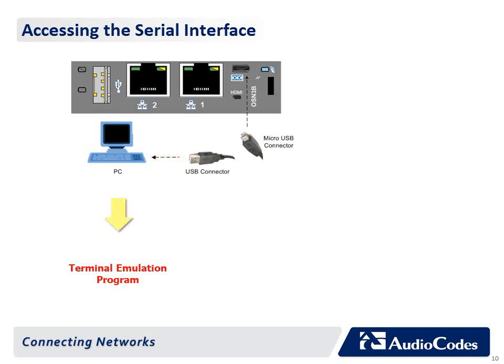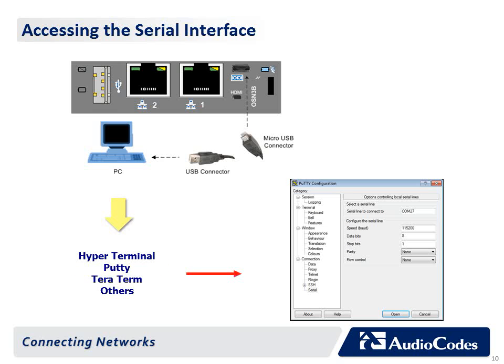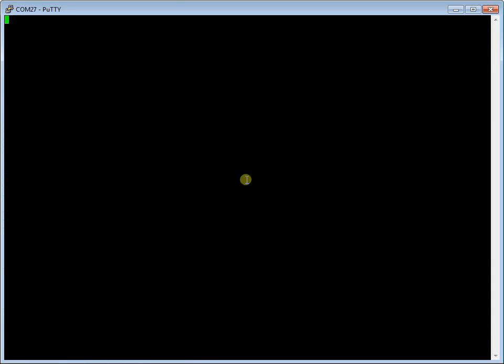Establish a serial communication with the OSN using a terminal emulation program such as HyperTerminal with the following port settings: bits per second 115,200, data bits 8, parity none, stop bits 1, flow control none. Press Enter. The serial console prompt is displayed: SAC. At the command line prompt, type I to view all the NIC addresses.